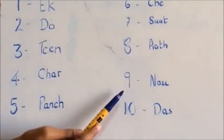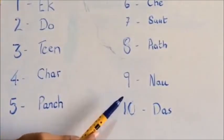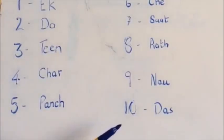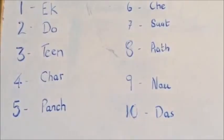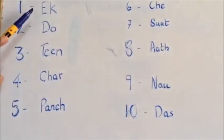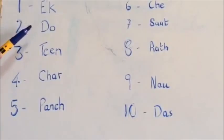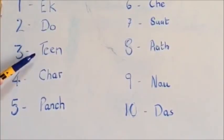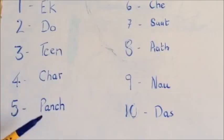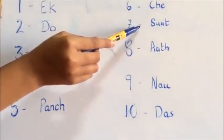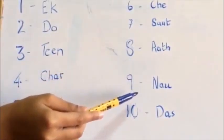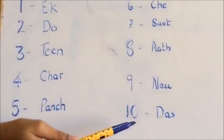For nine it's 'nau' — N-A-U — and for ten it's 'das' — D-A-S. That's all! I hope you liked this video and learned a few things about Hindi. Bye bye!